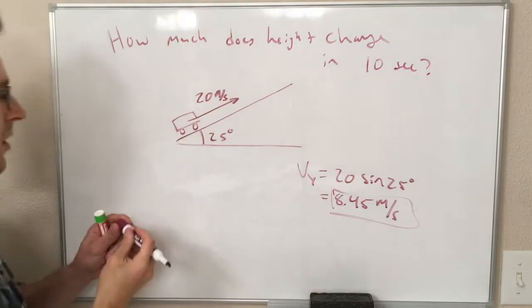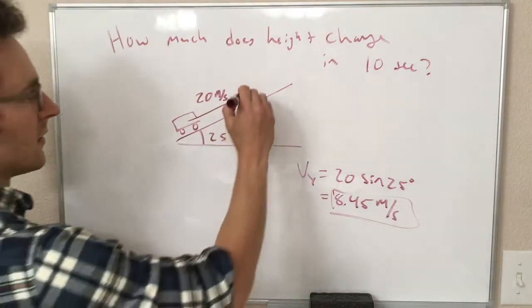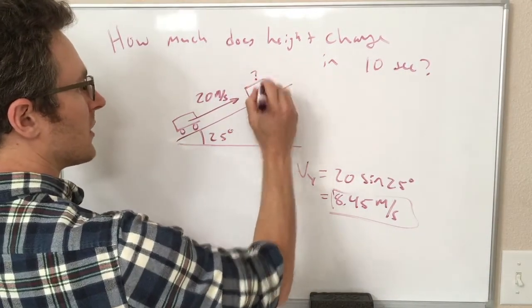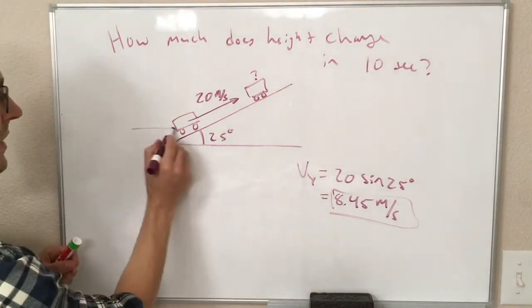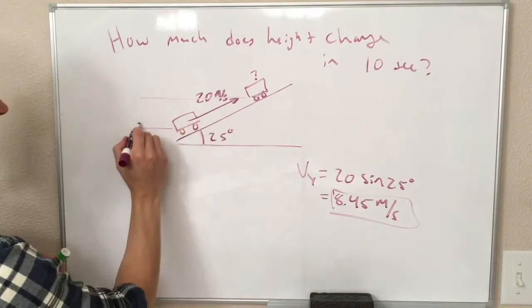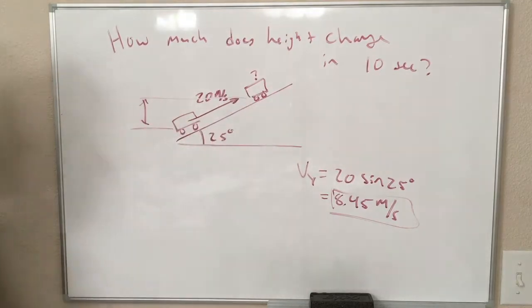So in other words, the car starts here, 10 seconds later, it's somewhere over here, we don't know exactly where, and we want to know how much its height changes. So it starts here, and it ends here.